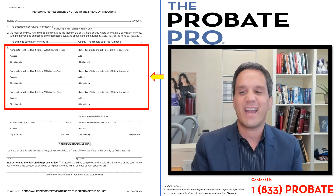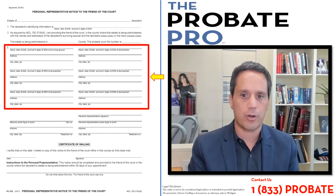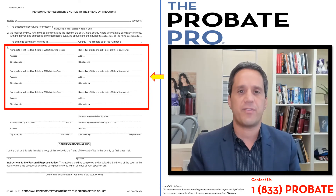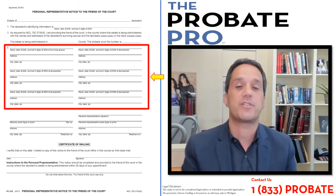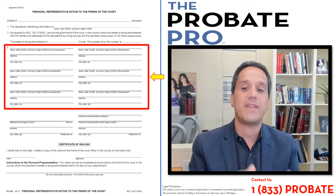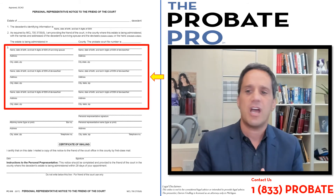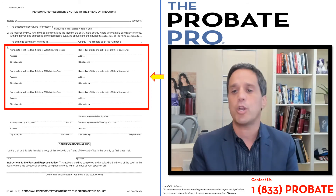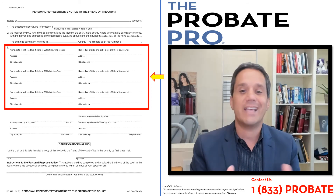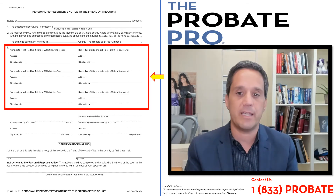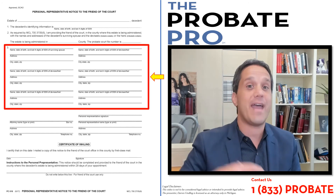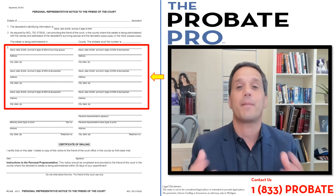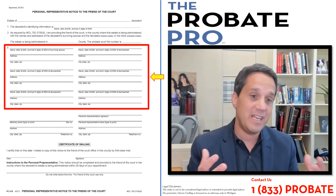In addition, there is a provision of the statute that says the personal representative who complies with the order in good faith is absolved of any liability. If there's a mistake by the Friend of the Court, or an error or omission, as long as it's made in good faith compliance, there is no liability. However, it does not say that if you fail to provide the notice you're absolved — because it is a requirement under the statute.